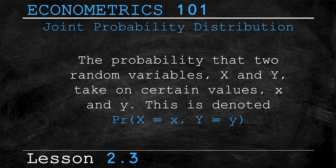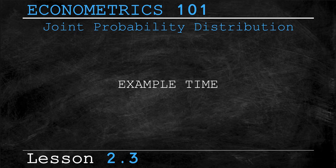This is denoted as Pr, or probability, of uppercase X — which is our variable — equals lowercase x, which is our possible outcome. And of course the same goes for our other variable: uppercase Y, the variable, equals lowercase y, which is a specific outcome. Sounds confusing right? Well then let's clear things up with an example, that should help.